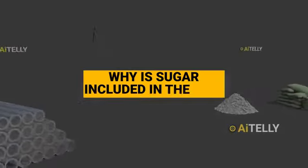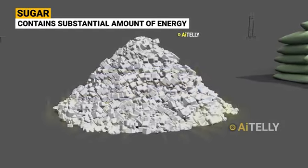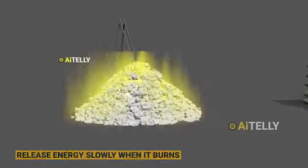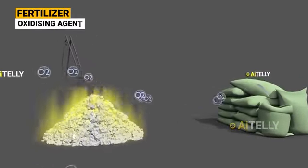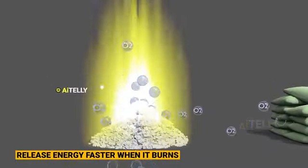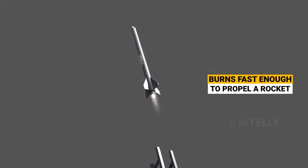You might wonder why sugar is included in the mix. Sugar contains a substantial amount of energy, but it releases this energy slowly when it burns, and the fertilizer serves as an oxidizing agent supplying oxygen. This allows for a much quicker release of energy. When the right proportions are used, it burns fast enough to propel a rocket, yet not so quickly as to cause an explosion.